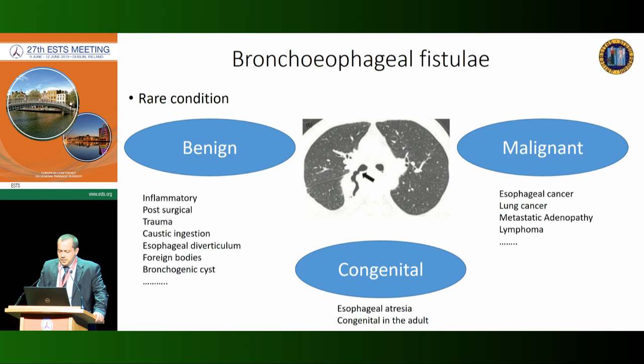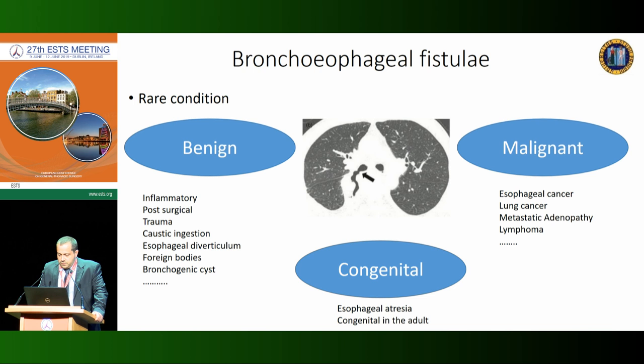The third and rarest group are the benign bronchoesophageal fistulas, which can be inflammatory — for example, during tuberculosis, histoplasmosis, silicosis, and other granulomatous diseases — or can be post-surgical, generally after esophagectomy with intrathoracic esophagogastric anastomosis. There are also some very rare etiologies like caustic ingestion, trauma, after lung transplantation, and others.